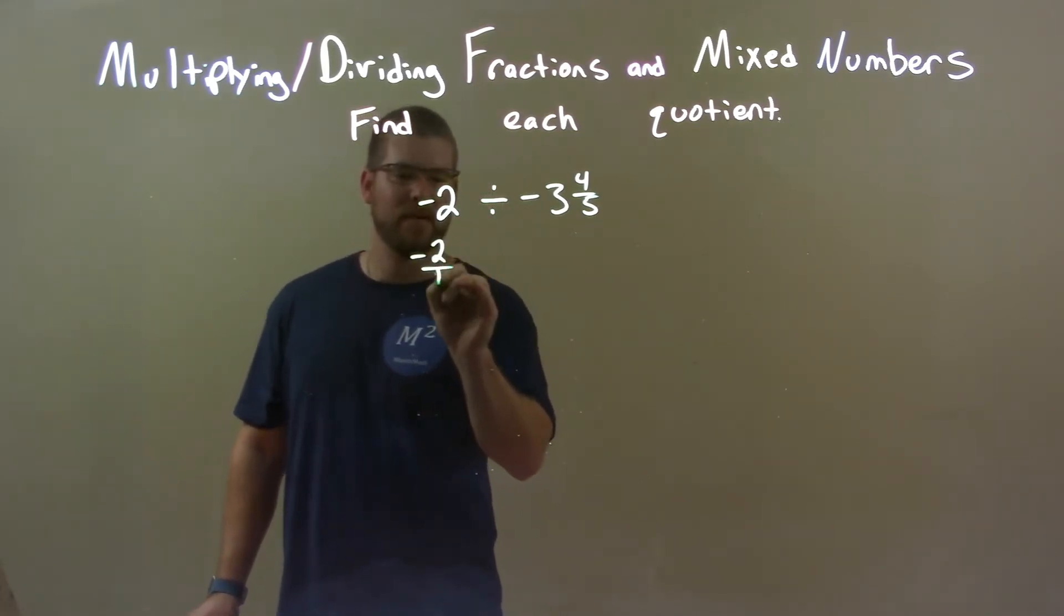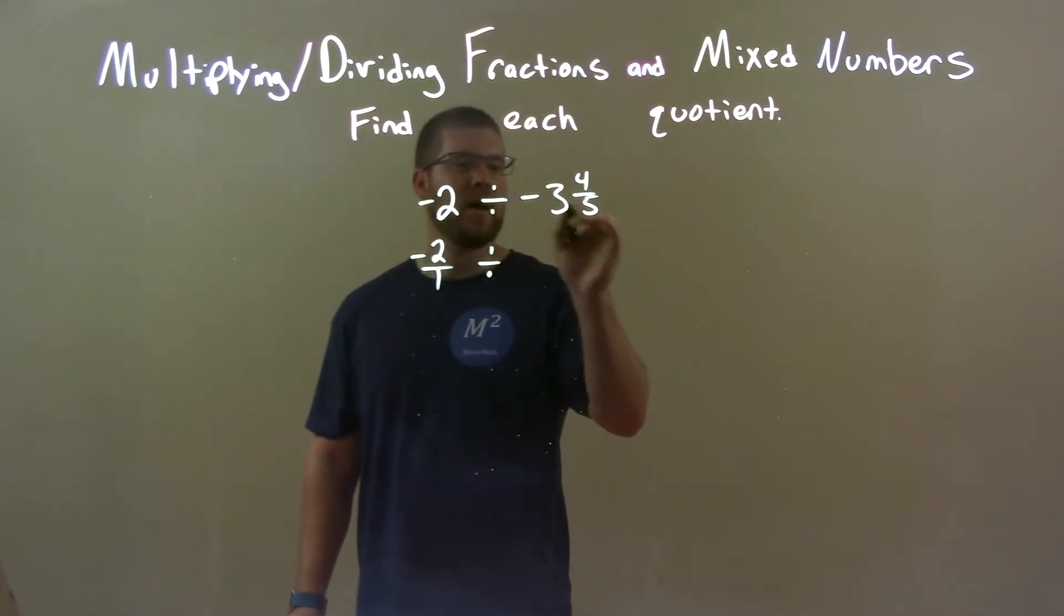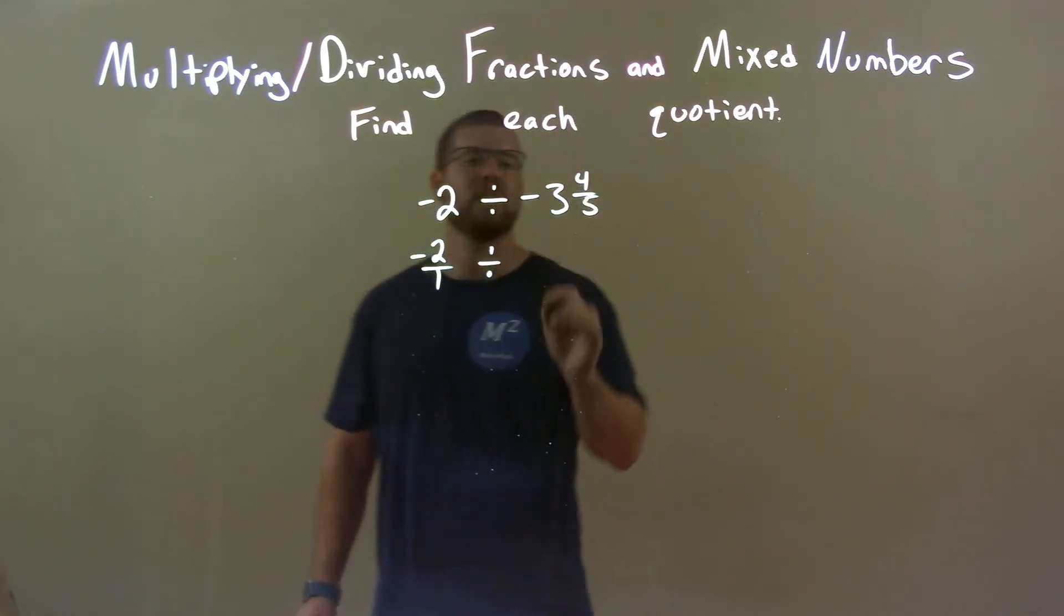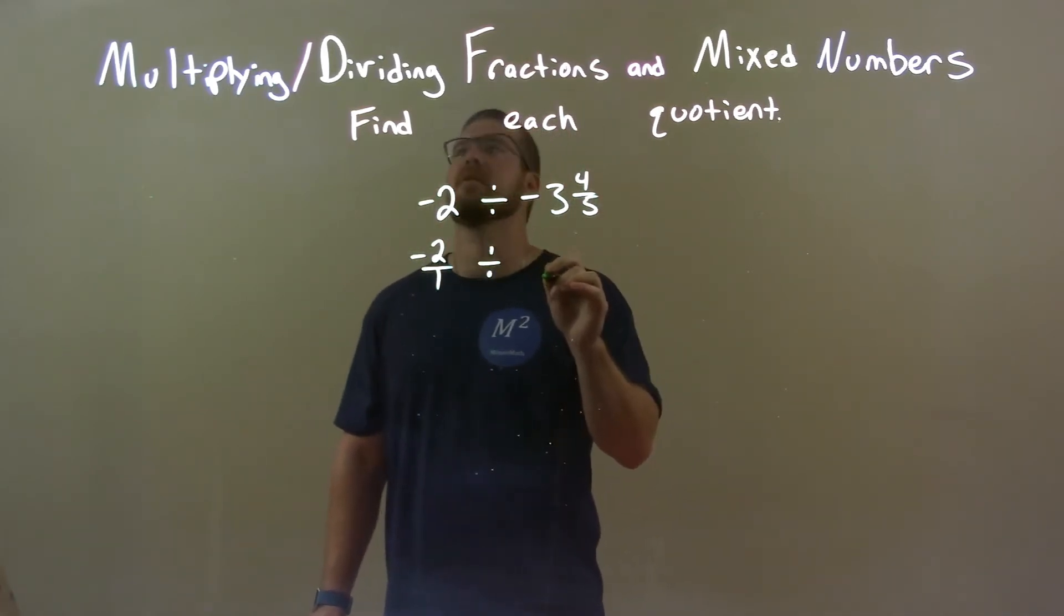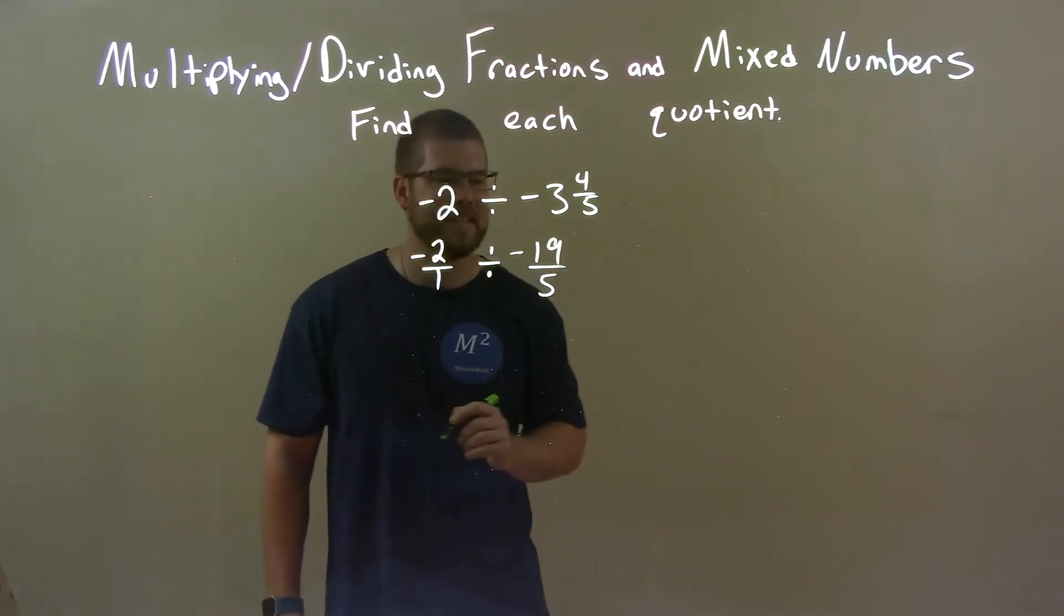So negative 2 is the same thing as negative 2 over 1, and divided by here, this one, 5 times 3 is 15 plus 4. 5 times 3 is 15 plus 4, we have 19. 19 over 5, and don't forget that it's a negative.